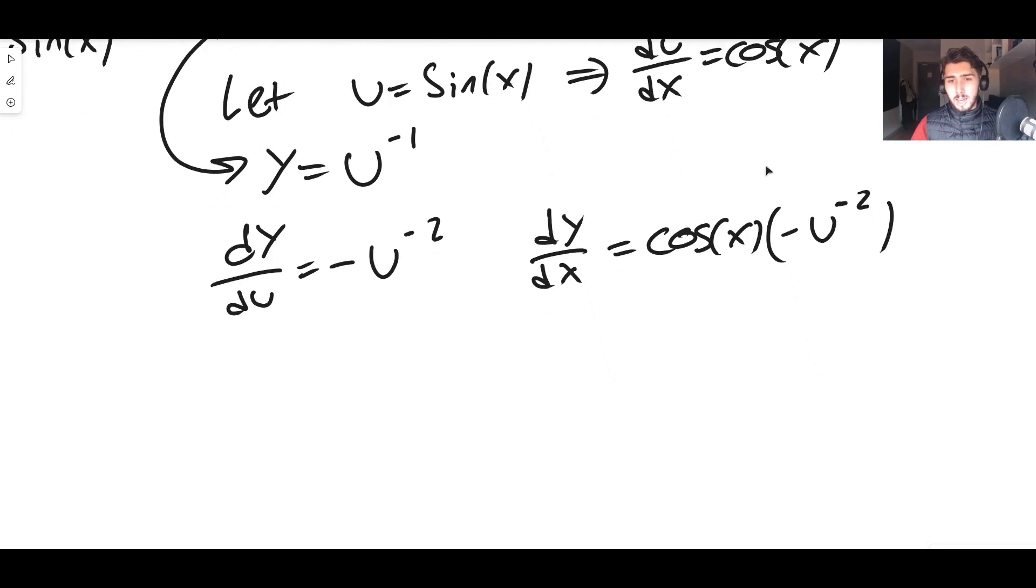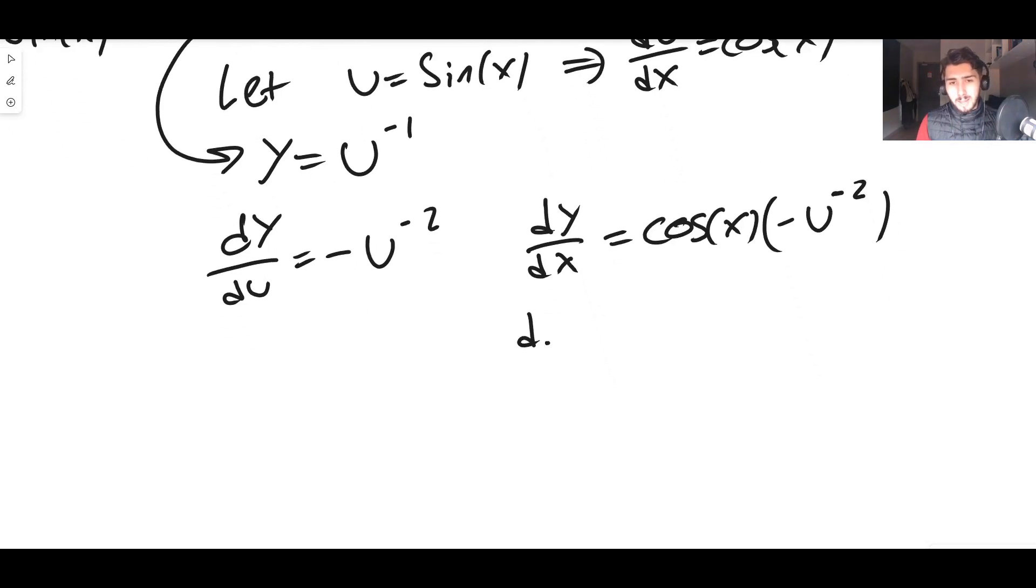This means that dy/dx is cos(x) multiplied by negative 1 over sin squared x, because u to the minus 2 is the same thing as 1 over u squared, and then squared, so sin squared x.